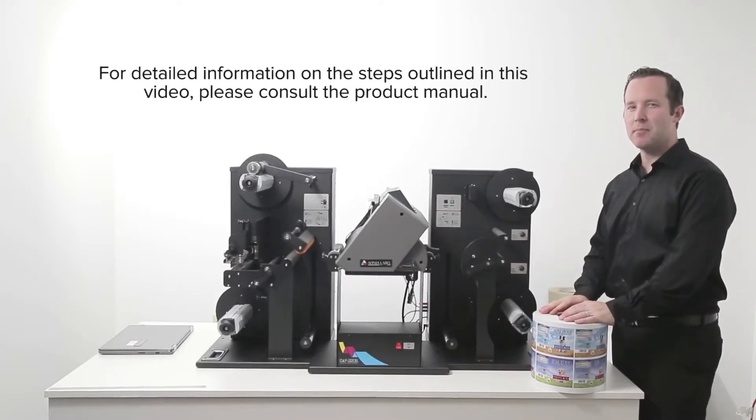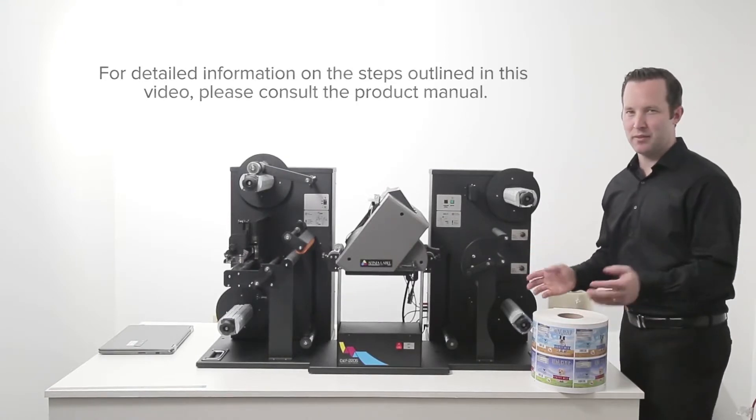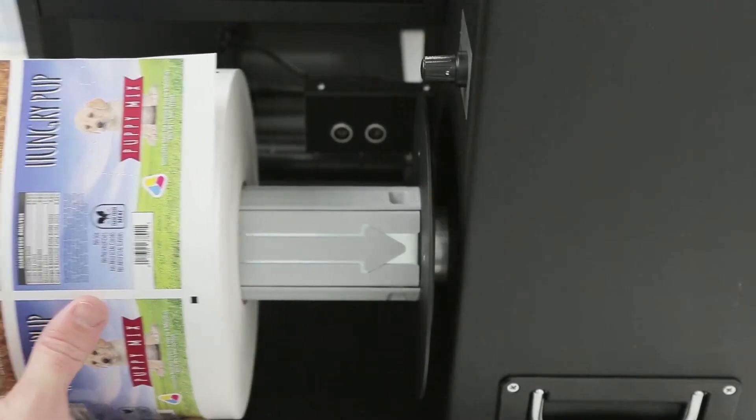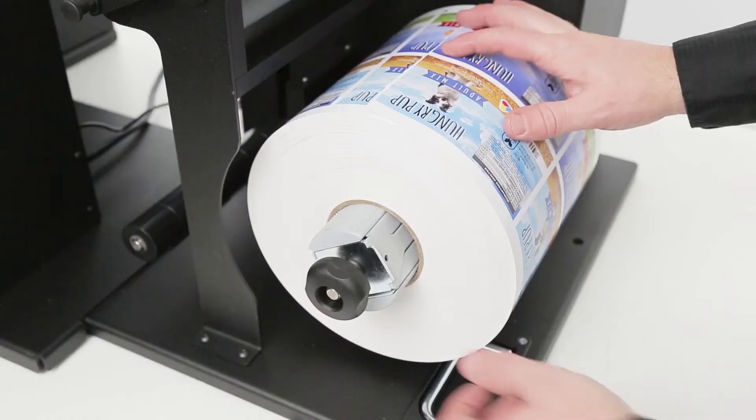Here's how to load the Affinia Mini Digital Label Finisher and get the best performance out of it. Slide the roll onto the core holder and ensure it's flush with the backing plate. Tighten this knob to secure the media.